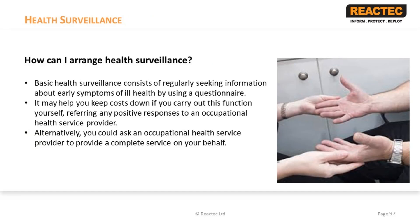To arrange health surveillance, it consists of frequently seeking information about early symptoms of ill health by using a questionnaire. It may help you keep costs down if you carry out this function yourself, referring any positive responses to an occupational health service provider. Alternatively, you could ask an occupational health service provider to provide a complete service on your behalf. It is essential that health professionals involved in health surveillance for HAVs can demonstrate the necessary expertise, as specialist training is required to carry out adequate clinical assessments to avoid misdiagnosing symptoms of HAVs. You should be able to find details of occupational health service providers from trade associations, the internet, or your nearest HSE office.